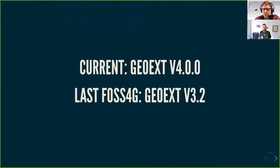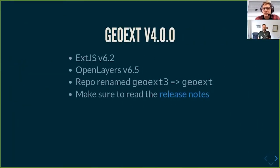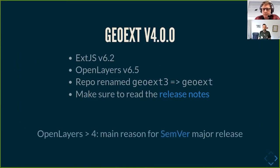The current GeoExt version is 4.0.0, which was a major step — at the last FOSS4G in 2019 we were at version 2.3. The biggest change is the integration of OpenLayers version 6, which took a long time and prompted the adoption of semantic versioning for GeoExt. There are no breaking changes between GeoExt 3 and 4, but given the huge step from OpenLayers 4 to 6 we agreed to name it version 4. We also renamed the repository from geo-ext3 to geo-ext. Tip: it's not a good idea to put a version number in your project name.